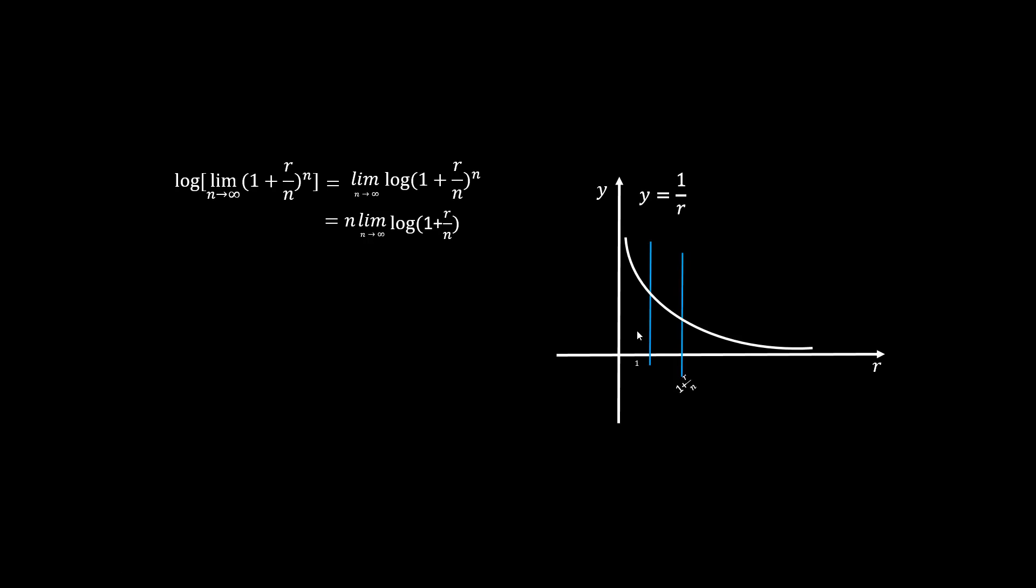The proof is very similar to before. First we switch the operation. Then move N to the front. Then consider log as the area under the curve between 1 and 1 plus R over N. Now as N goes to infinity, the area approaches a rectangle with a height of 1, width of R over N.